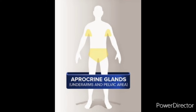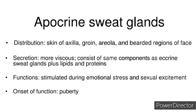The second type of sweat gland found in the body are the apocrine glands. These are generally located in the groin, the underarms, the top of the head, or anywhere that has more coarse thick hair. The apocrine glands usually secrete the same components as the eccrine sweat glands, but they contain more lipids and proteins, giving them more of a foul odor. These glands are usually stimulated during emotional stress, physical activity, and sexual stimulation. The onset of these glands is usually during the time of puberty.